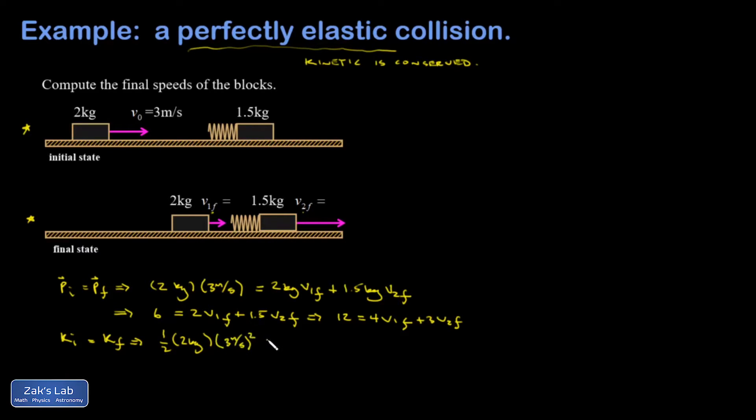Has to be equal to one half times the two kilograms times its final velocity squared, plus the other source of kinetic energy in the final state, one half times one and a half kilograms times v2 final squared.